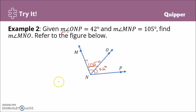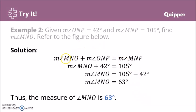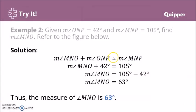We will use the angle addition postulate. Angle MNO and angle ONP share a common vertex N and a common side ray NO, so the postulate applies. The equation is: measure of angle MNO plus measure of angle ONP equals measure of angle MNP, which gives us angle MNO plus 42 degrees equals 105 degrees.